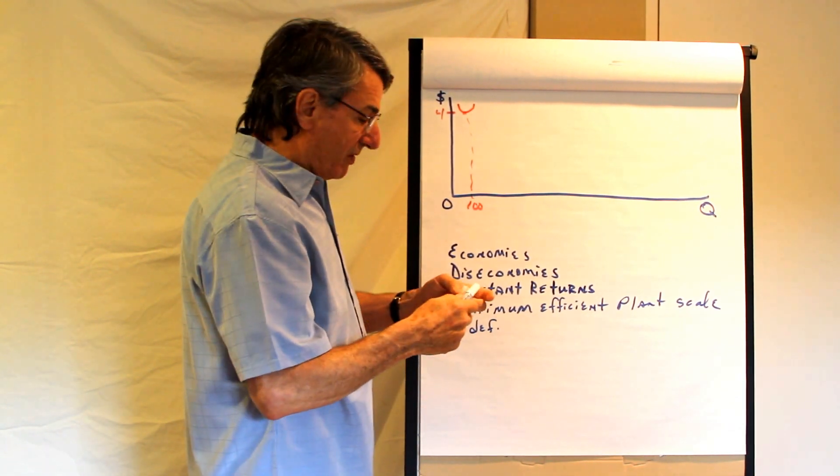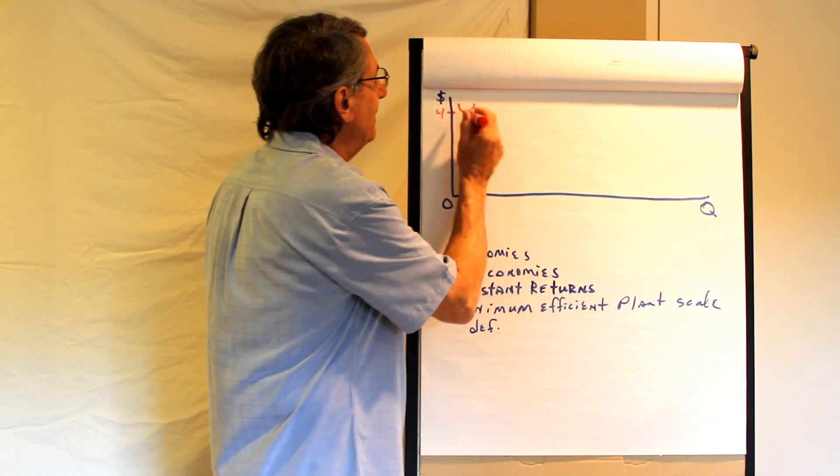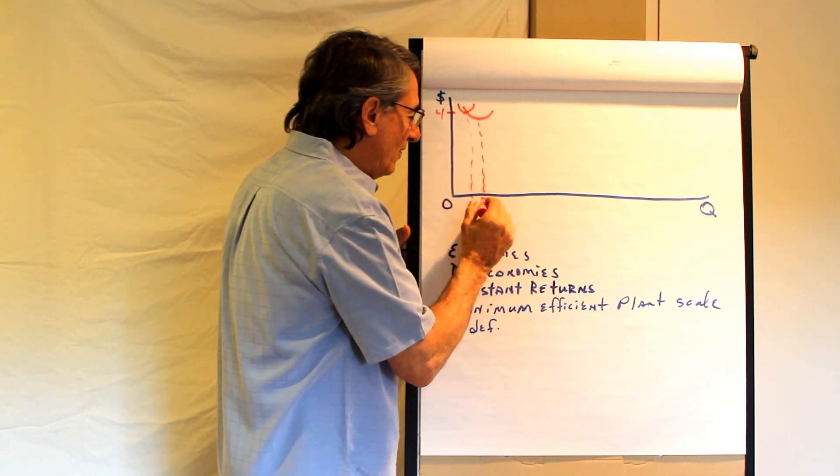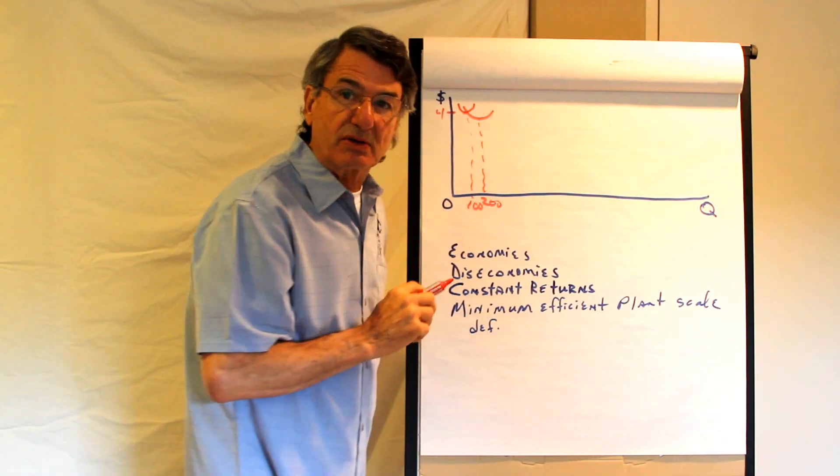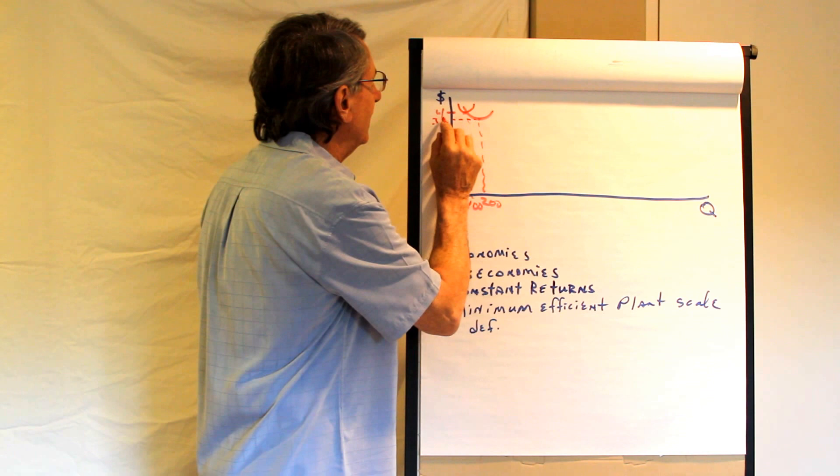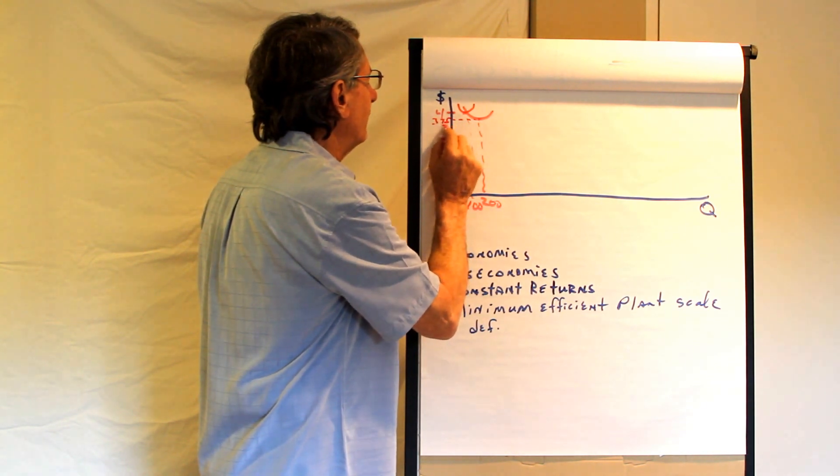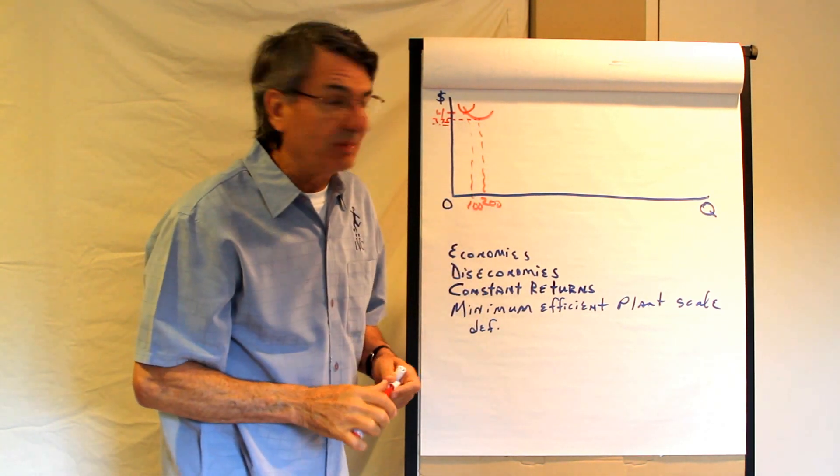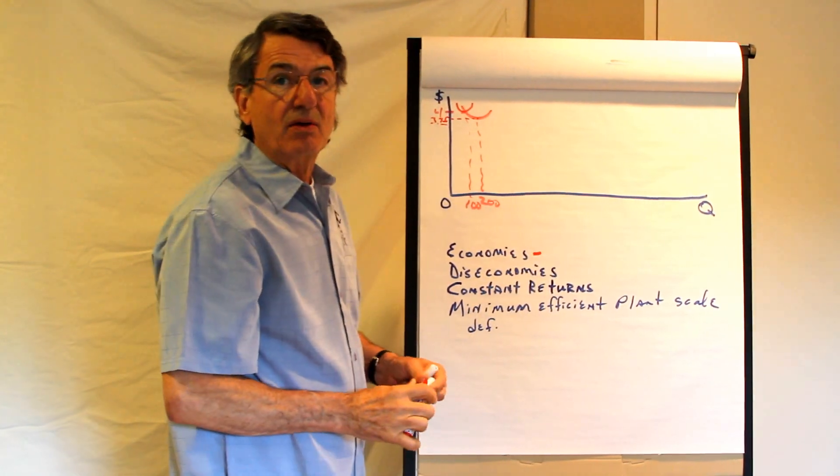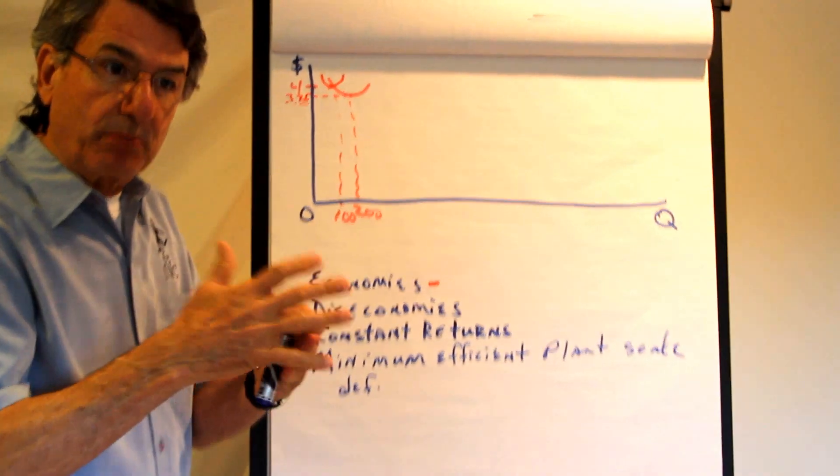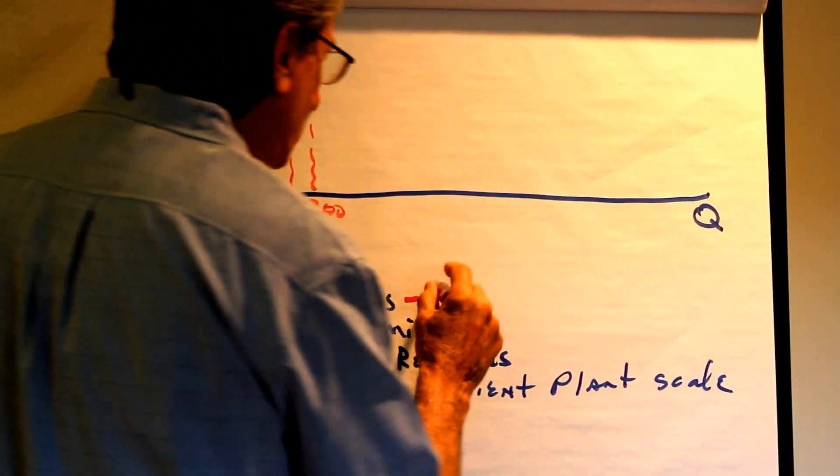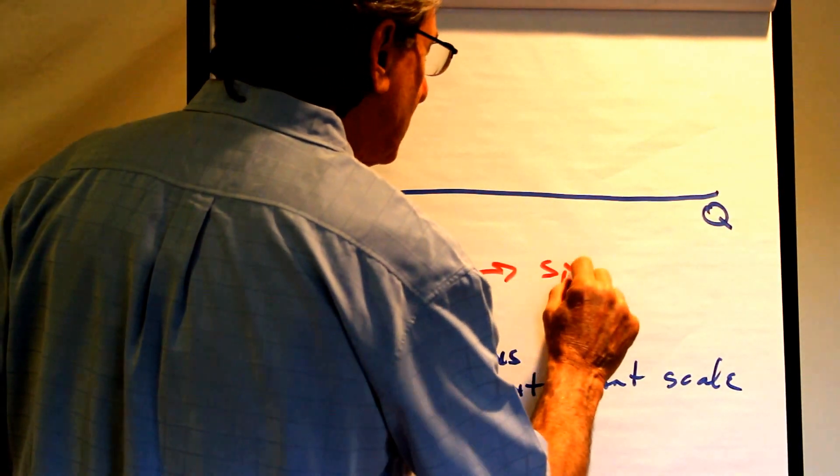What if the firm is able somehow to build a bigger scale plant. What that means is now that plant can produce 200 loaves a day and the costs of production go down to $3.75 per loaf. How is that possible? Because of economies of scale. Economies of scale mean that as the plant gets larger the costs per unit go down.